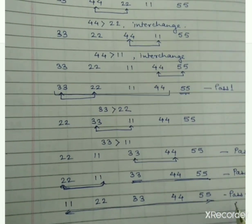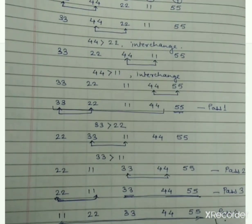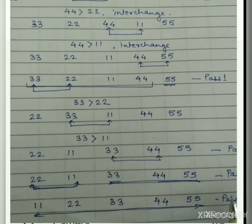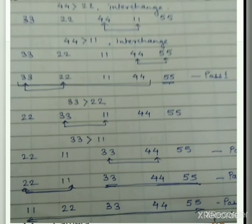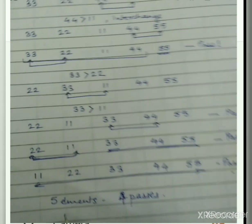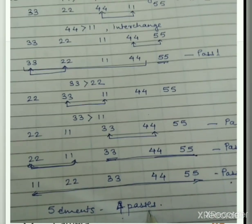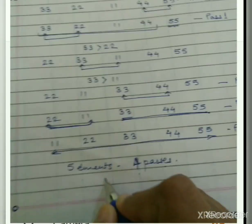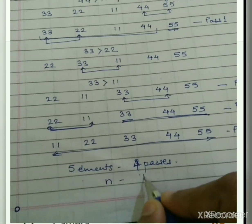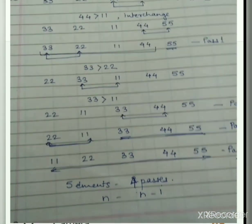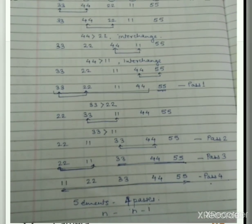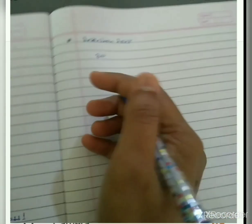For bubble sort with five elements, the maximum number of passes required is 4. In general, if there are n elements, the number of passes required is n minus 1. This is the maximum number of passes required to sort elements using bubble sort. Now we will move on to selection sort.